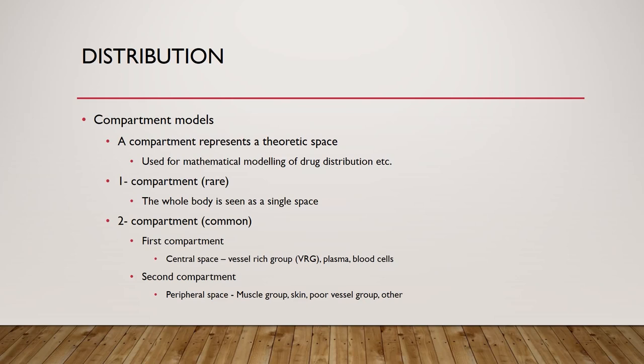By far most drugs are not single-compartment but multiple-compartment. A two-compartment drug considers the first compartment the central space where the drug is primarily distributed, and the second compartment the peripheral space where the drug goes next and is stored for a while. These drugs have a slower distribution and equalization, going first to areas with the highest perfusion — the vessel-rich group — then secondarily distributing throughout the body in the peripheral compartment of skin, muscle, and poor-vessel group.